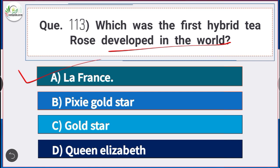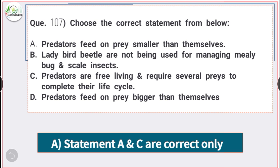Question number 114: Consider the following statements. Statement A: Predators feed on prey smaller than themselves. Statement B: Ladybird beetles are not being used for managing mealy bug and scale insects. Statement C: Parasitoids are free-living and require special hosts to complete the life cycle. Statement D: Parasitoids feed on prey bigger than themselves. Only statements A and C are correct.